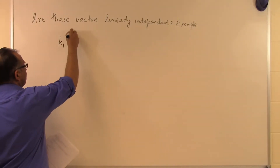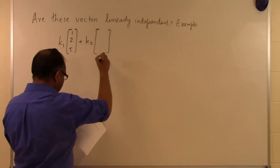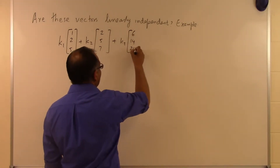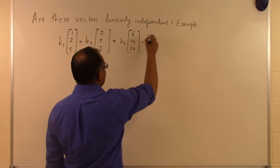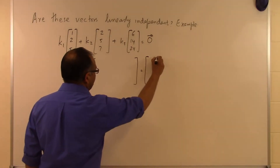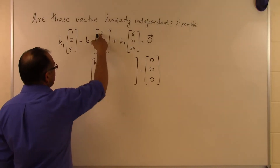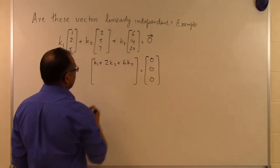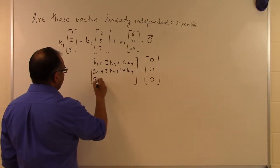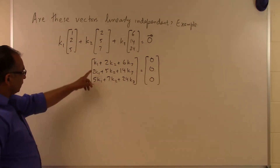Let's write down the linear combinations for the three vectors: K1 times (1, 2, 5) plus K2 times (2, 5, 7) plus K3 times (6, 14, 24) equals the zero vector. Combining the left-hand side gives three equations: K1 + 2K2 + 6K3 = 0, then 2K1 + 5K2 + 14K3 = 0, and 5K1 + 7K2 + 24K3 = 0. That's three equations, three unknowns.